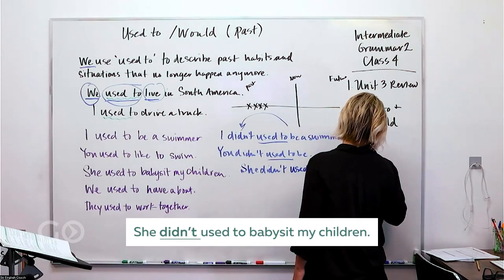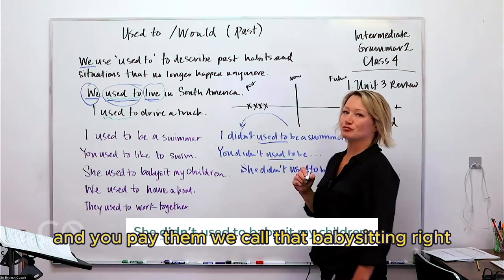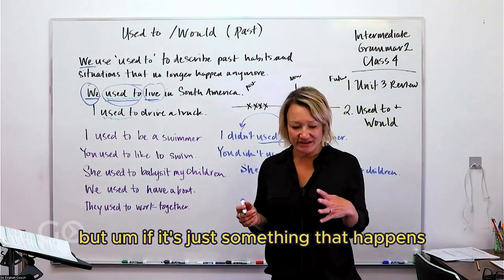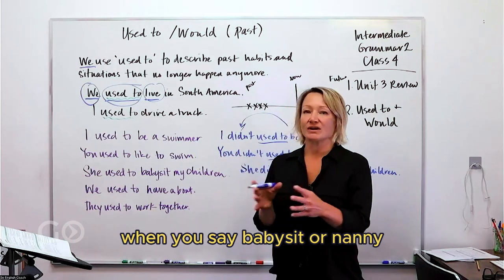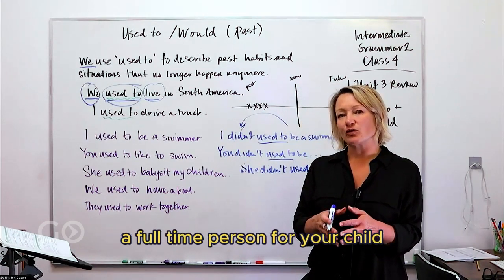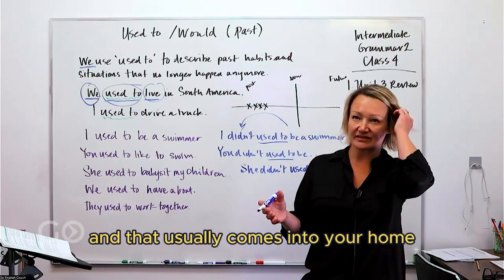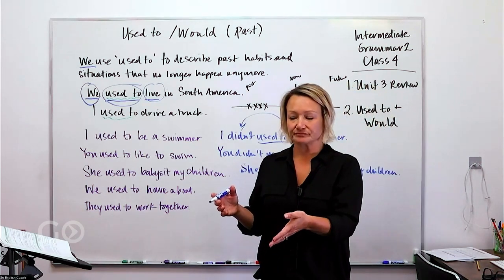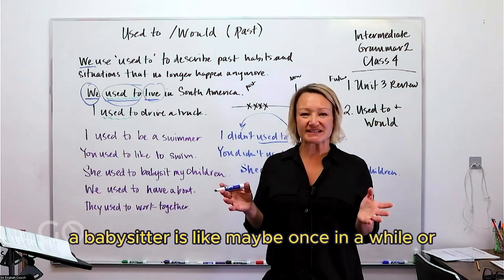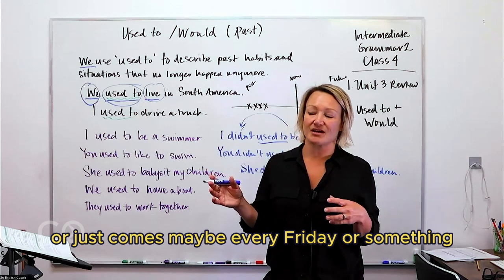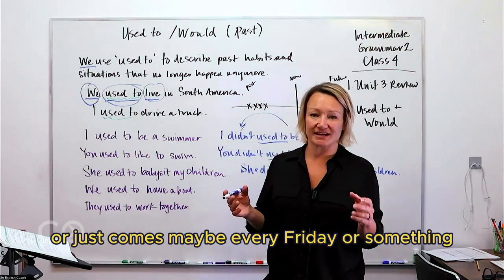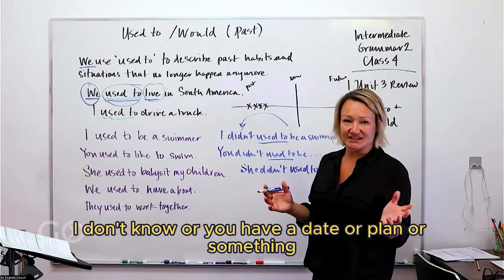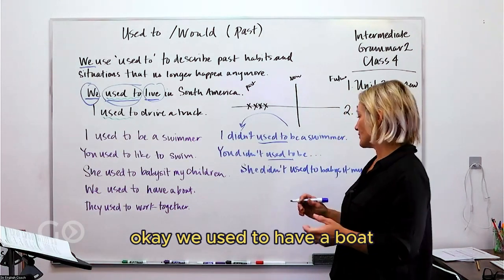By the way, what does 'babysit' mean? If somebody watches your children and you pay them, we call that babysitting. A nanny is like a full-time person for your child who usually comes into your home every day. A babysitter comes maybe once in a while — perhaps every Friday evening so you and your partner can have dinner or a date.